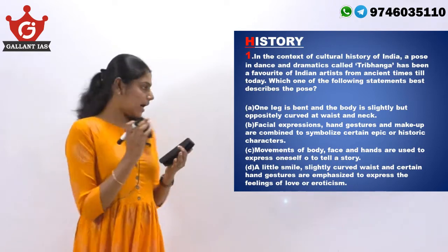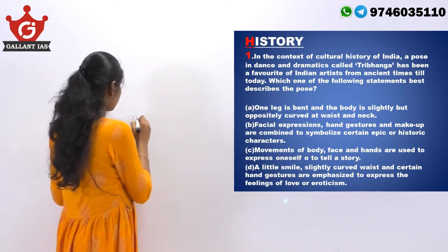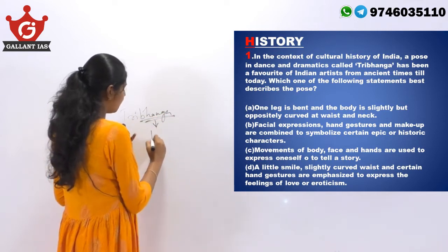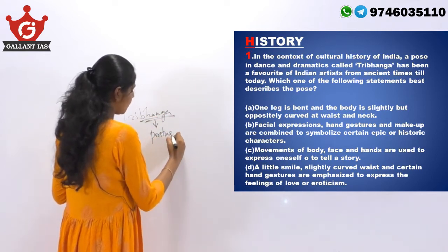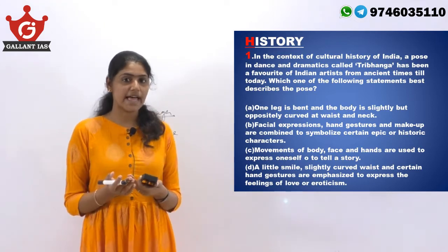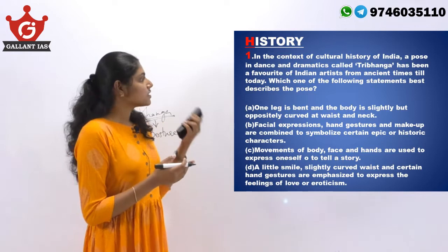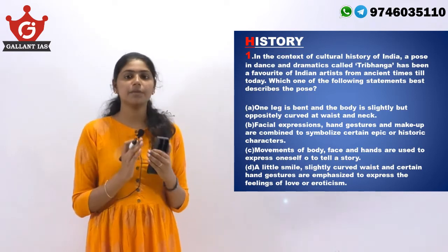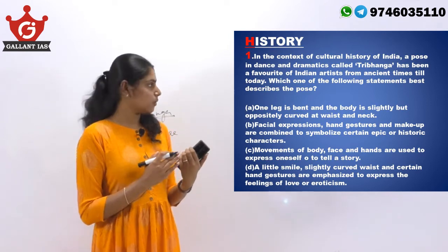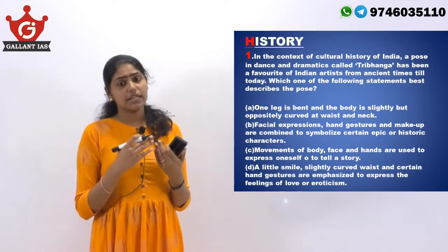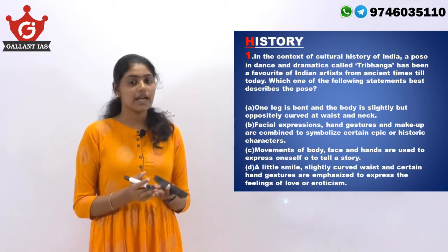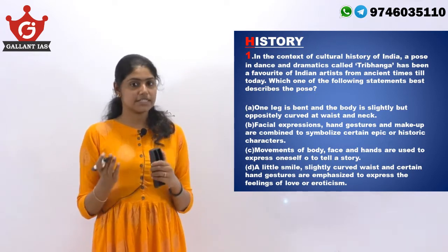Banga denotes posture — poses that are used in various Indian classical dance forms and art forms. Thribanga is actually a tri-banga posture which denotes three bends in the body of performers. It is extensively used in classical dance forms like Odissi and also in Indian traditional sculptures.